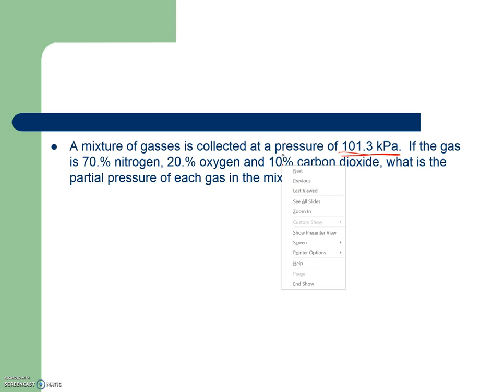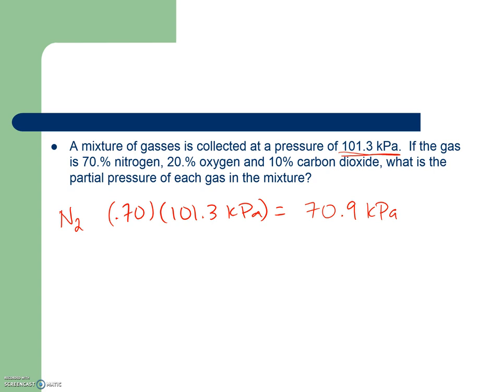Well, they're going to contribute to the pressure based on how much of each of them we have. So if we're looking at N2, if we know our total pressure is 101.3, then 70% or 0.70 of 101.3 kilopascals will be contributed to by the nitrogen. So 70.9 kilopascals is due to the nitrogen.